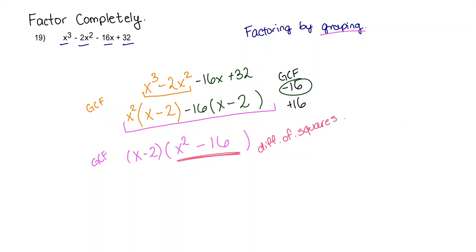A difference of squares is when you have two squares and then you have a subtraction sign in between them. Which is exactly what we have here. We have x times x and then over here, although it doesn't look like it, 16 can also be written as 4 times 4. So 4 squared.